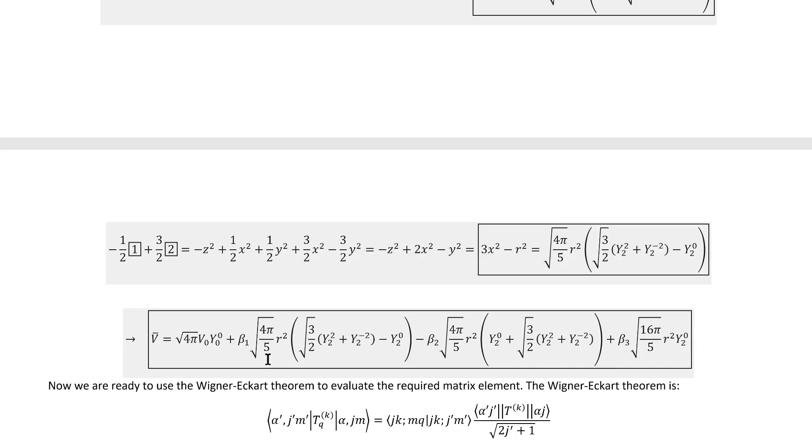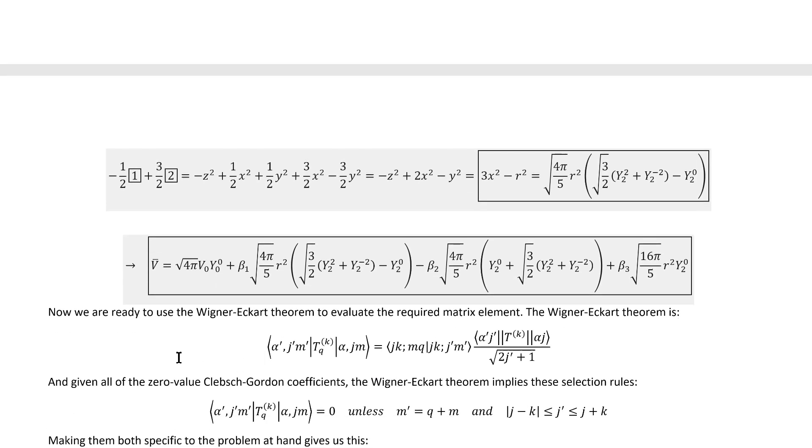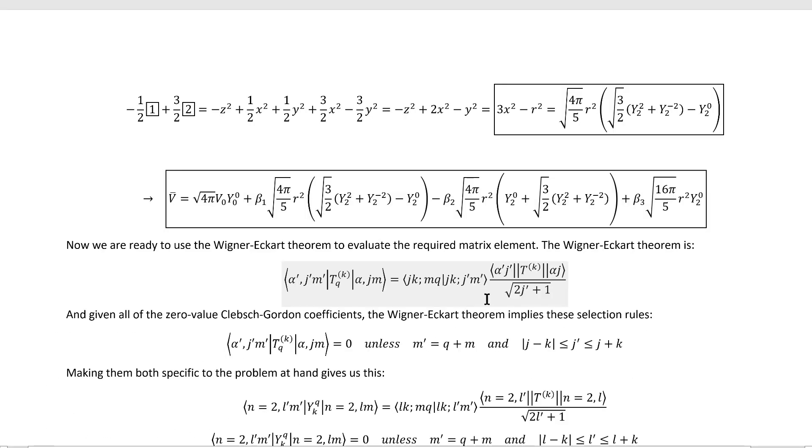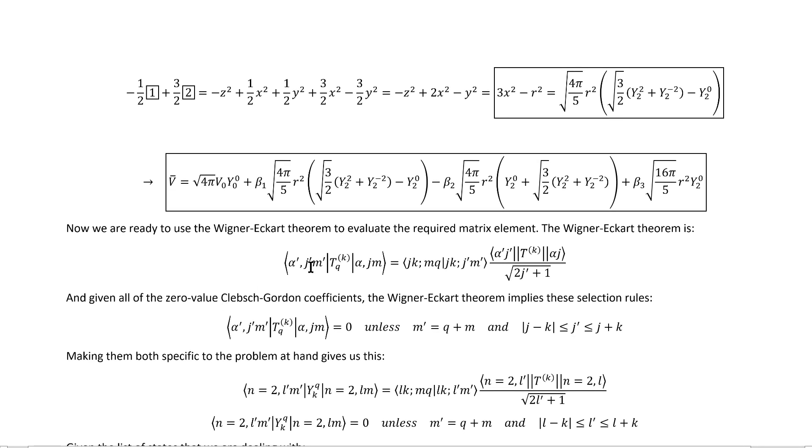And now that we finally have the potential expressed in terms of spherical tensors, we can move on to applying the Wigner-Eckart theorem. The first thing to notice about the Wigner-Eckart theorem is that a lot of these coefficients are zero. And as a result, a lot of the matrix elements that we actually need to evaluate are immediately zero based purely on that fact. If we think about which one of these are non-zero, it's pretty easy to extract these selection rules.